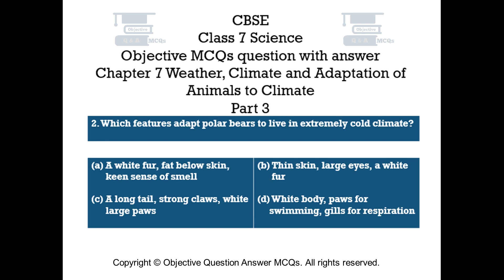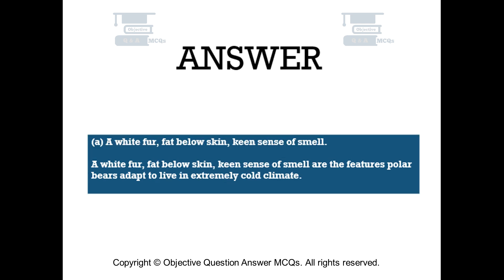Question number 2. Which features adapt polar bears to live in extremely cold climate? Option A: A white fur, fat below skin, keen sense of smell. Option B: Thin skin, large eyes, a white fur. Option C: A long tail, strong claws, white large paws. Option D: White body, paws for swimming, gills for respiration. The right answer is Option A. White fur, fat below skin, and keen sense of smell are the features polar bears use to adapt to extremely cold climate.